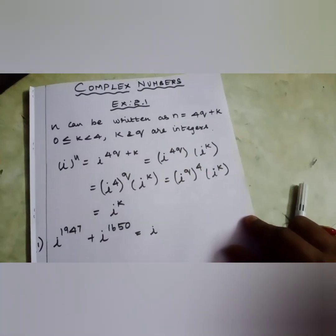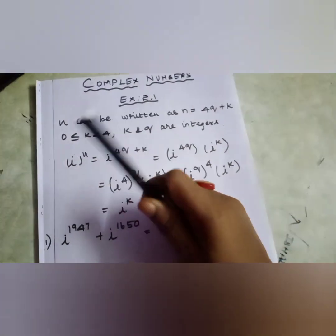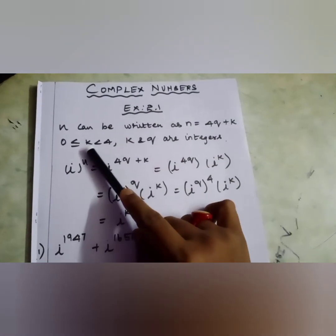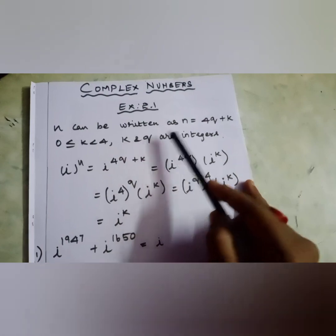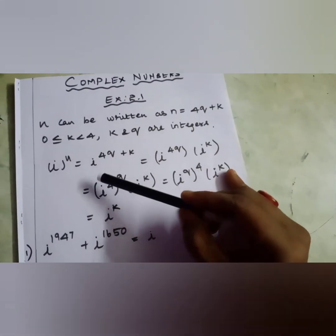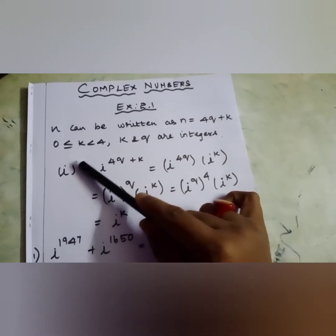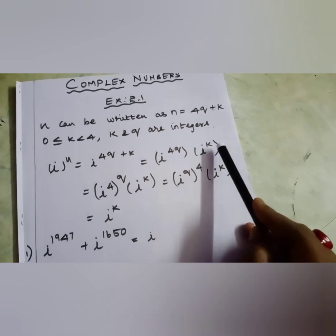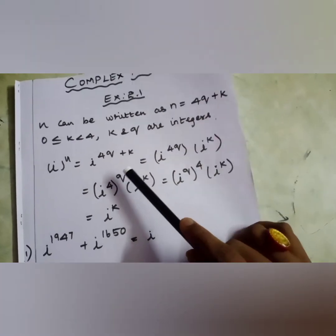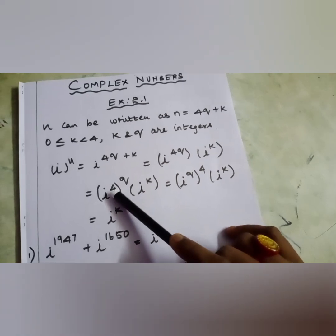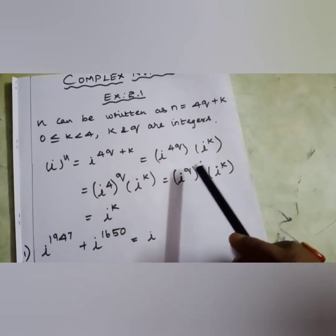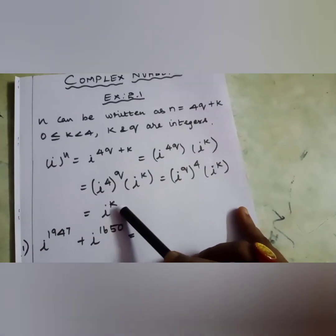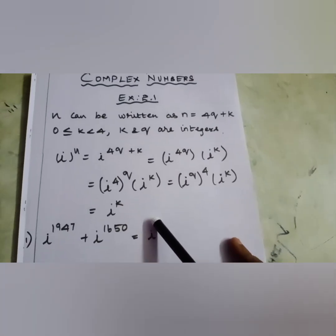Before exercise 2.1, let us go through the concept once more. n can be written as n = 4q + k, where k takes values between 0 and less than 4, and k and q are integers. So i power n, the power of i, can be written as a product of 4 plus its remainder. Splitting: i power 4k into i power k, because bases are the same so powers are added. Then i power (4q) whole power 4 into i power k. Since i power 4 is 1, we get i power k. This is what we will apply in the sums.